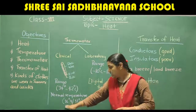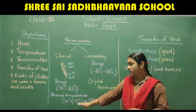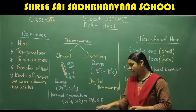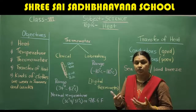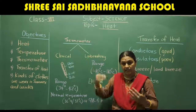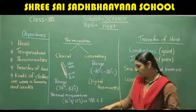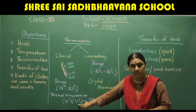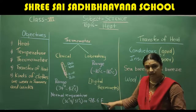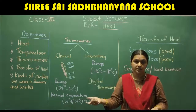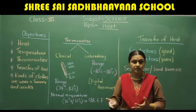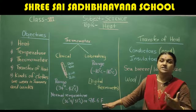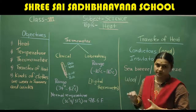The normal temperature of a human being is 36.9 degrees or 37 degrees Celsius, or 98.6 Fahrenheit. Celsius and Fahrenheit are the standard units to measure temperature. In India we use Celsius, and in other parts they use Fahrenheit — just like how the standard unit for length is kilometer or meter, and for weight it is kilograms. Celsius and Fahrenheit are the standard units to measure temperature.